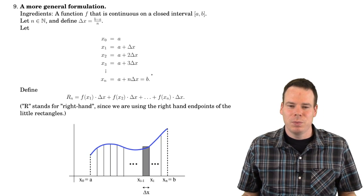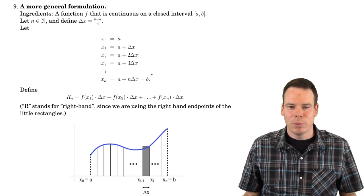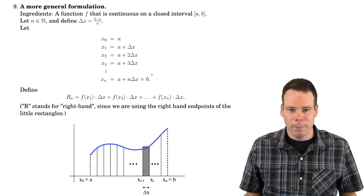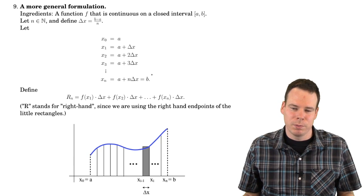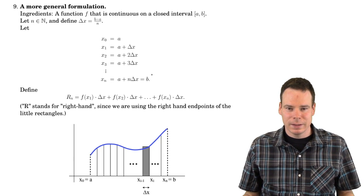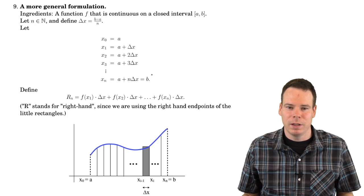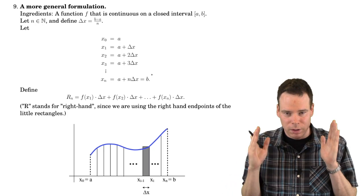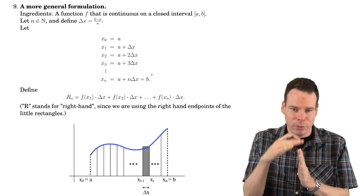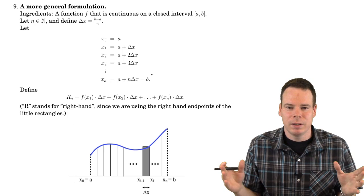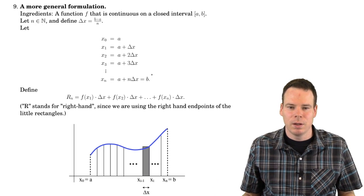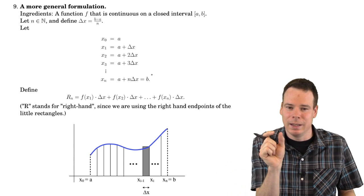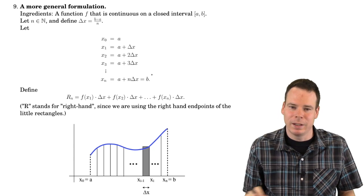Hi everyone. In the first part of this lecture we looked at the motivation problem of calculus — the area problem — and we managed to work out what the area is under a quadratic curve, y equals x squared, over the interval from 0 to 3 using the process of slicing it up into intervals, approximating the area under the curve on each interval by a rectangle, and then looking at the limit of this process as the number of rectangles went to infinity, or equivalently as the width of the individual rectangles went to 0.